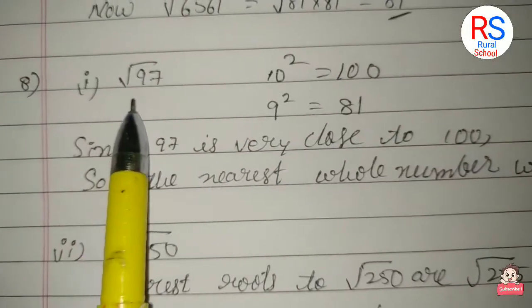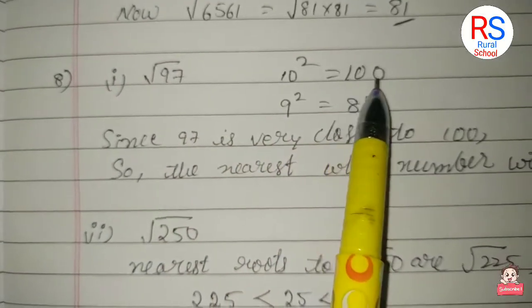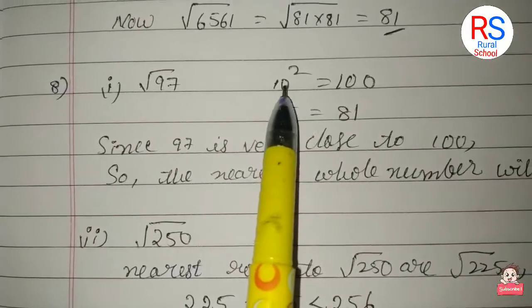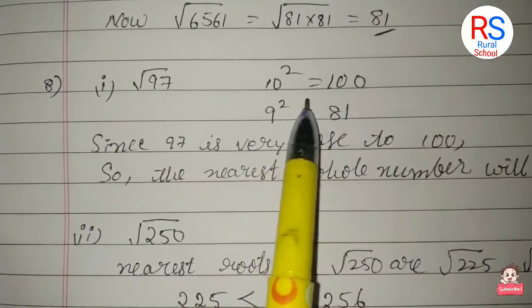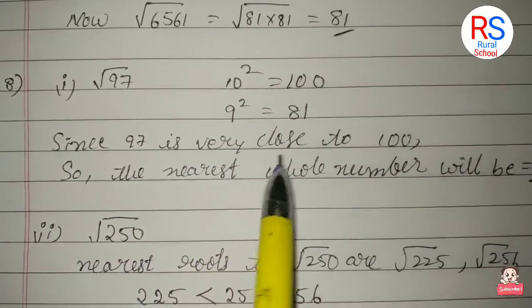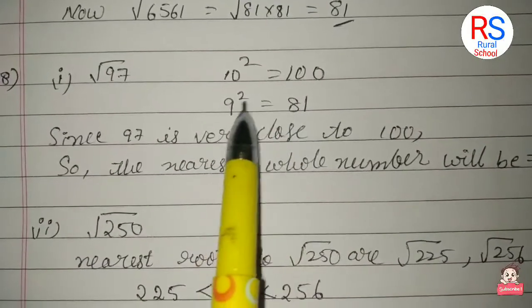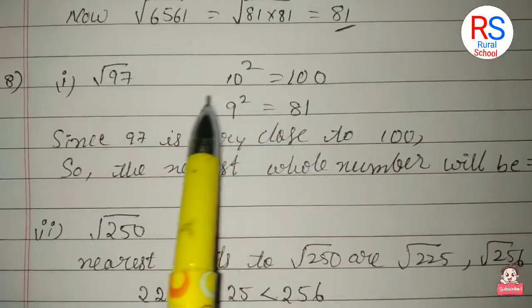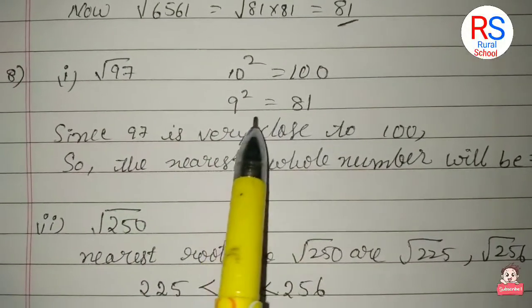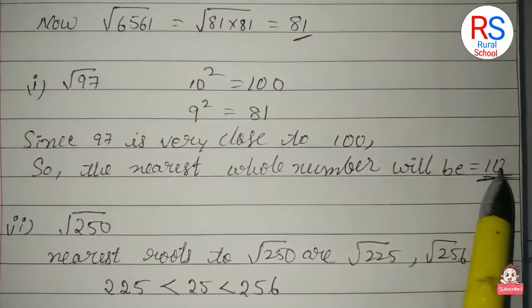See here, 97 is 3 less than 100. 10² = 100, and 9² = 81. Since 97 is very close to 100—only 3 steps away—and much farther from 81, the nearest whole number will be 10.